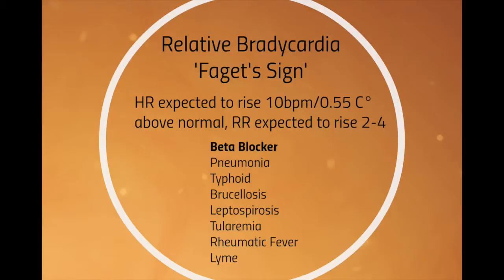Intracellular pathogens classically associated with Faget sign include typhoid from Salmonella, leptospirosis, tularemia, and brucellosis. We still see those, but they're very, very rare. Now that could still be the case, but most of the time the relative bradycardia is explained by pneumonia and a beta blocker on board.